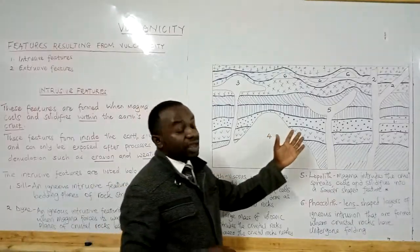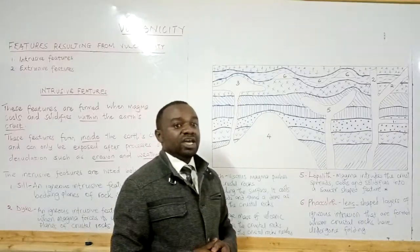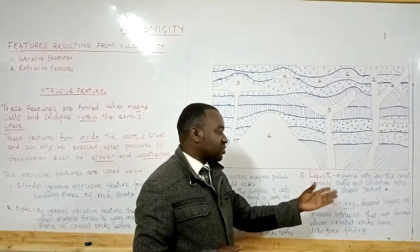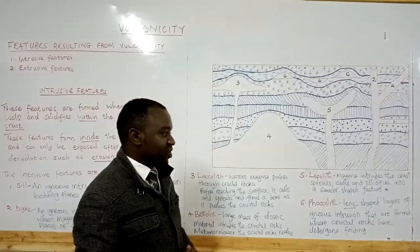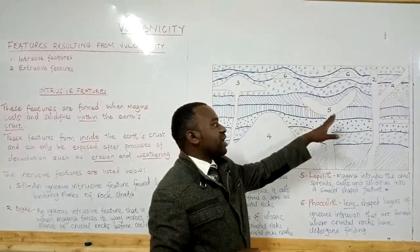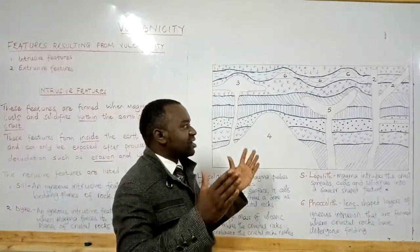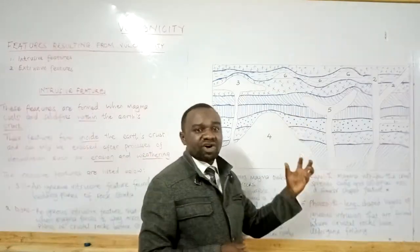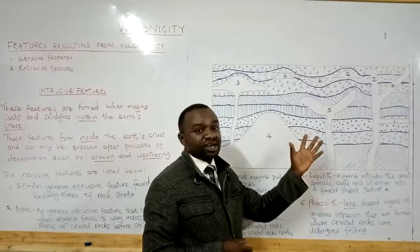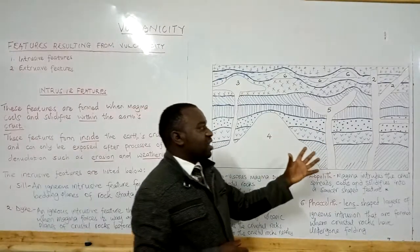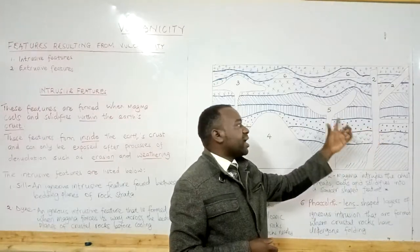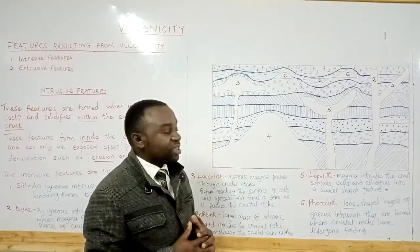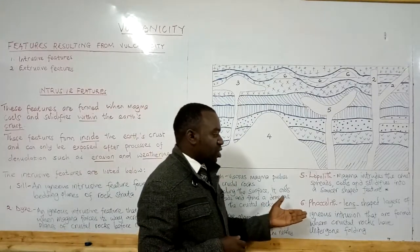The next feature is what we call the lopolith. A lopolith is a saucer-shaped igneous intrusion that is formed when magma intrudes the crust, spreads, cools, and solidifies into a saucer-shaped feature. This shape is believed to be a result of the weight of the overlying crustal rocks pressing down. A lopolith is formed similarly to a sill, but the difference is that it is weighed down by the crustal rocks, causing it to form a saucer shape.